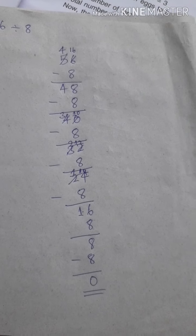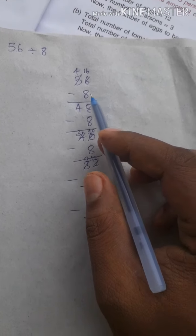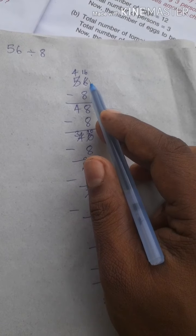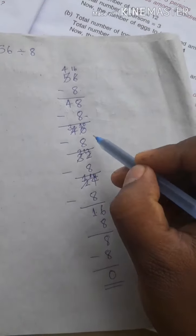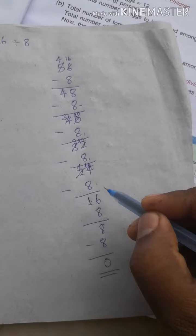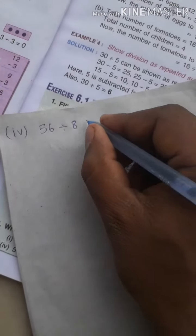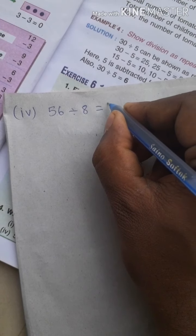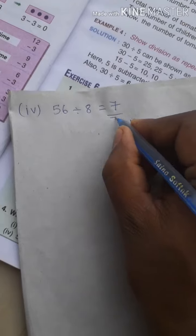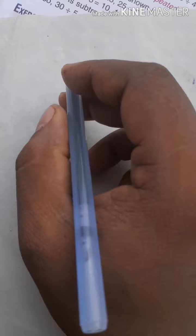We subtracted 8 from 56 how many times to get 0? 1, 2, 3, 4, 5, 6, 7 times. So which means 56 divided by 8 is equal to 7.